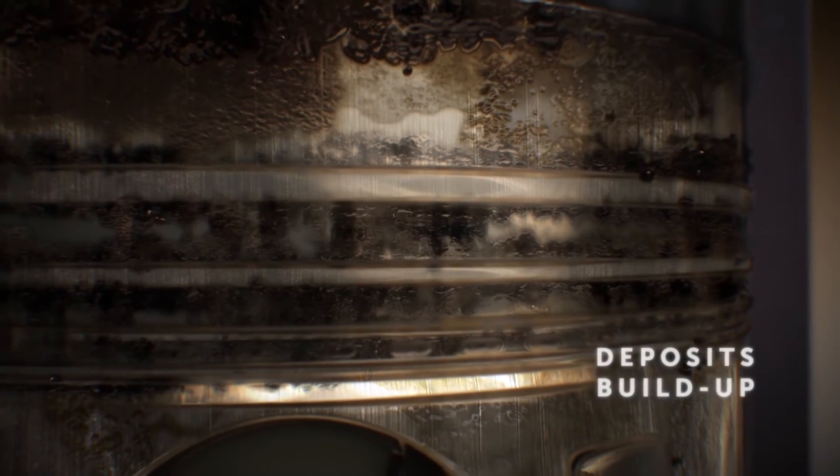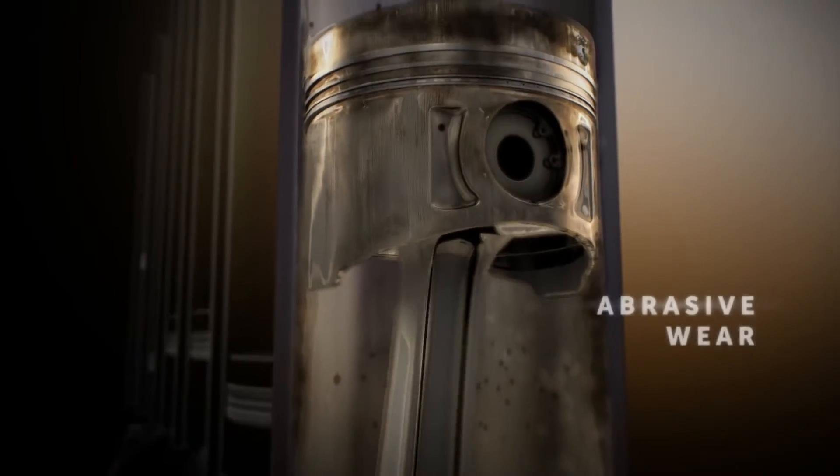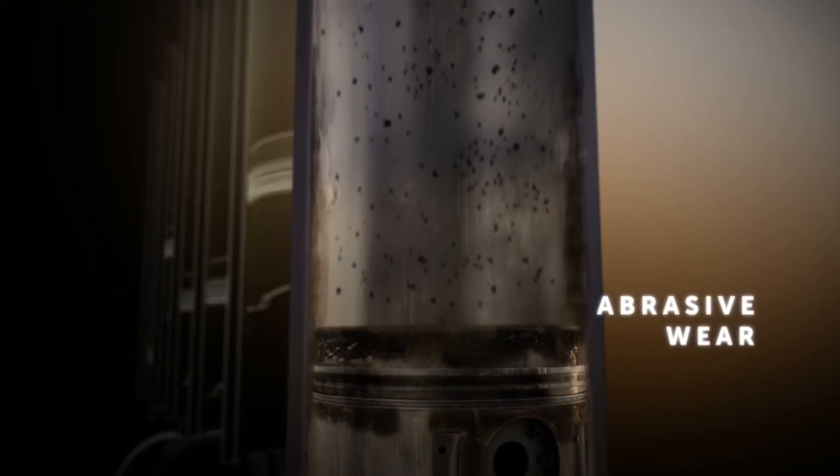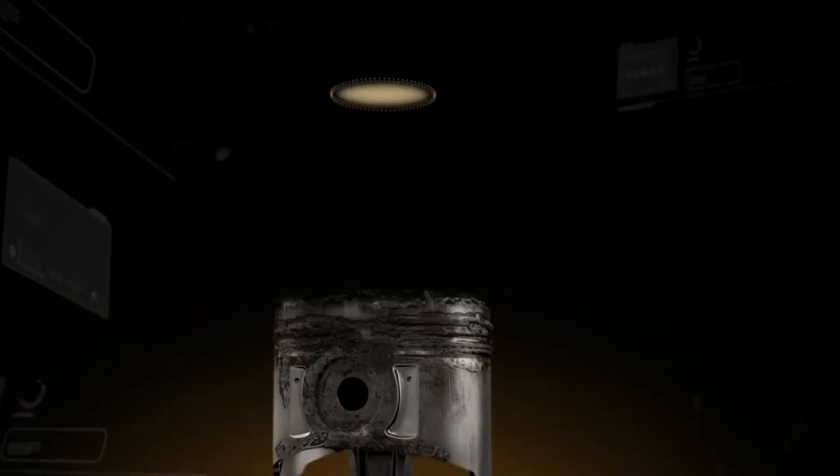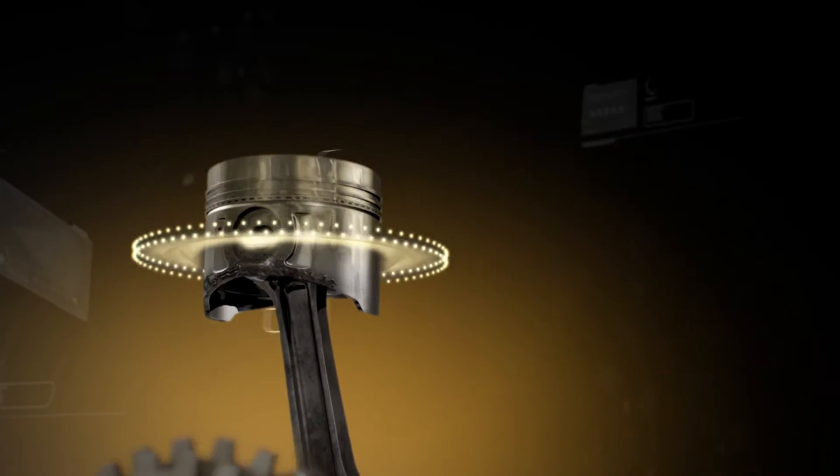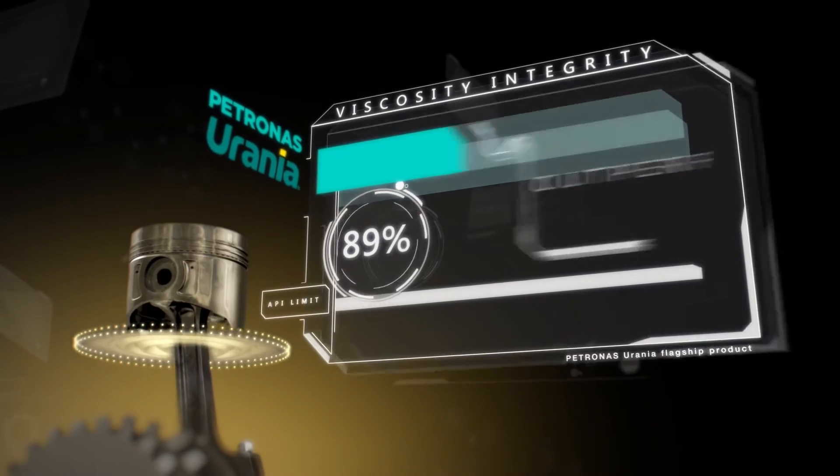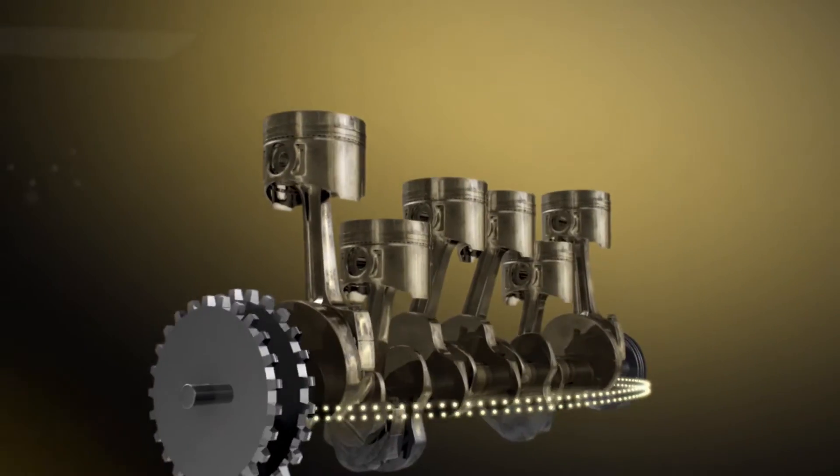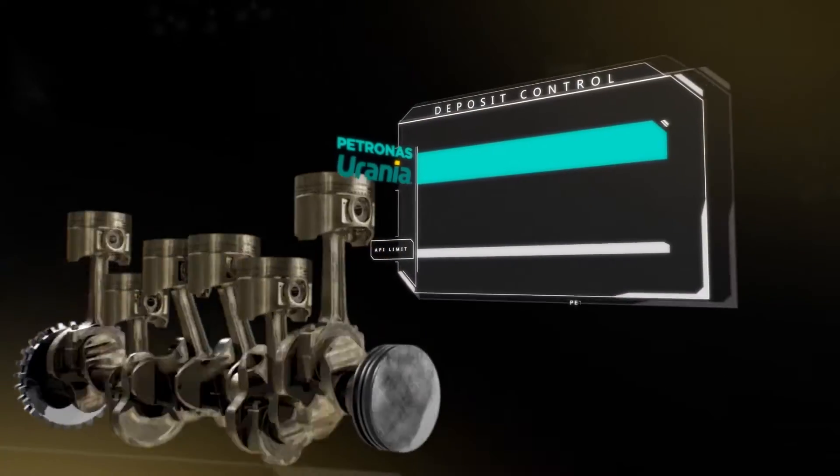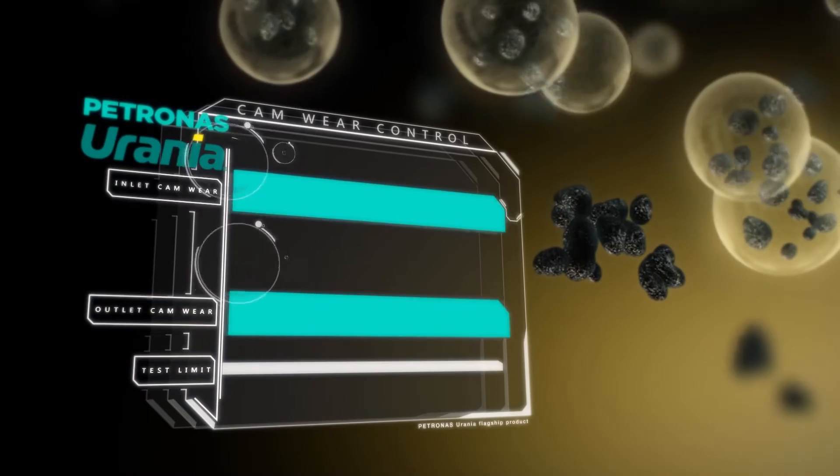Petronas Urania with ViscGuard is formulated to maintain stable oil viscosity, effectively guarding against deposit build-up and abrasive wear. The viscosity of the oil is maintained all the way to the next oil change, allowing your engine to perform at optimum levels.